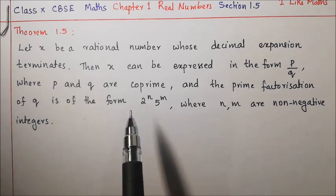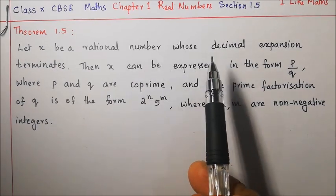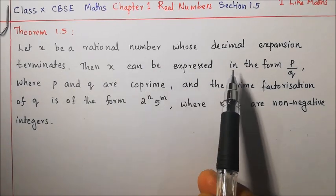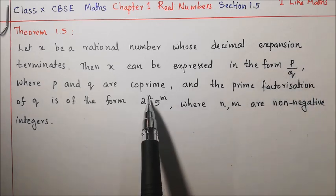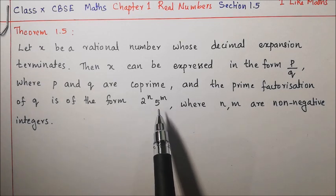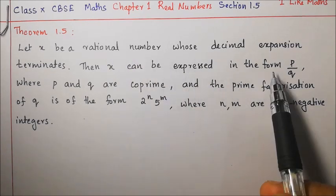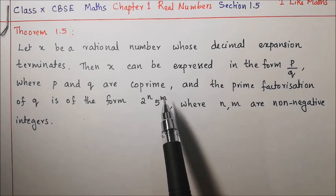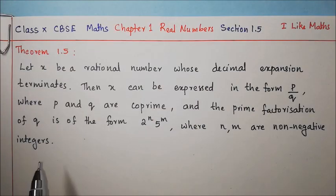We have two more related theorems. By Theorem 1.5 we know that if a rational number's decimal expansion terminates and it is expressed as p by q, then q has the form 2 to the power n into 5 to the power m. What about the other way round? If we find a rational number p by q and q is in that form, will its decimal expansion also be terminating? Yes — that is the next theorem.